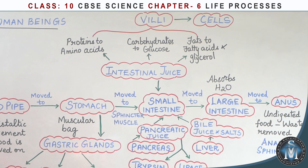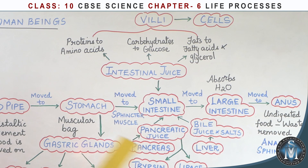The undigested food is removed from the body through the anus via the anal sphincter muscle. This completes the process of nutrition in human beings.